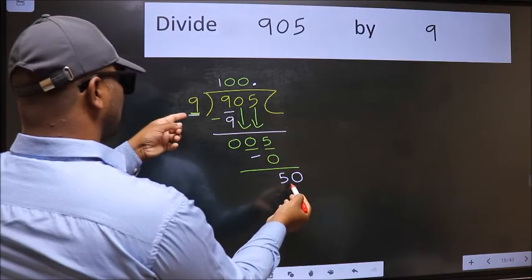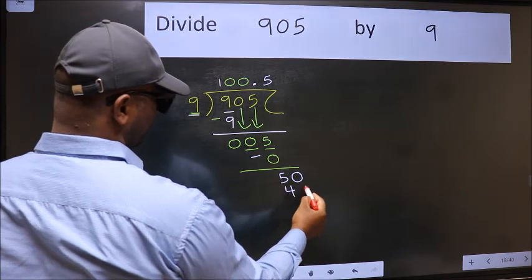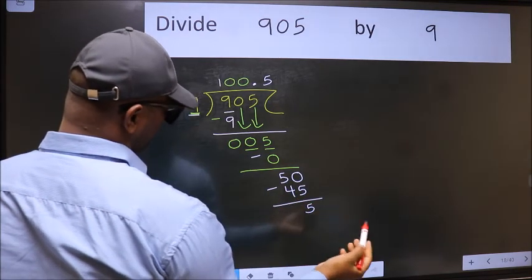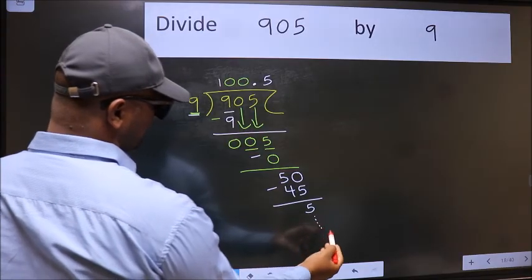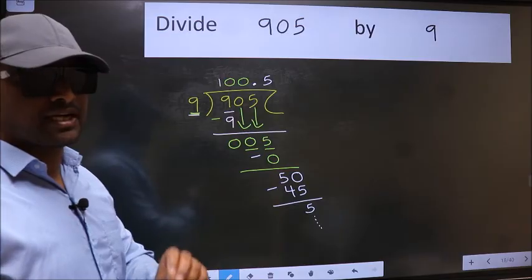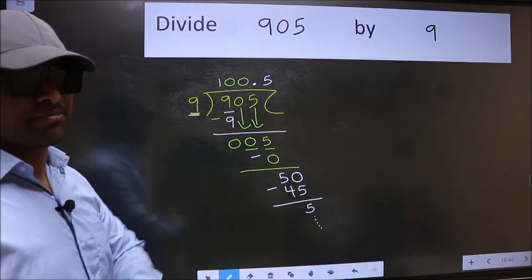A number close to 50 in the 9 table is 9 fives 45. Now we should subtract. We get 5. And you continue the division. I am not doing that. Did you understand where the mistake happens? You should not do that mistake.